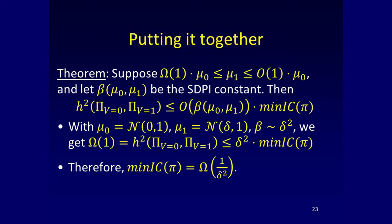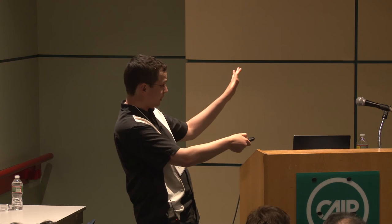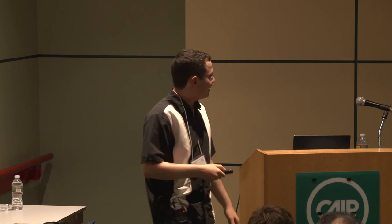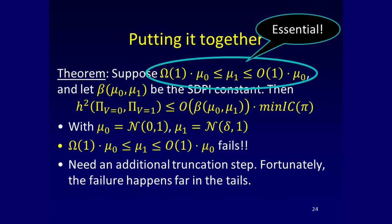The problem with the condition is that if mu_zero and mu_one are two shifted normal distributions, you need those two distributions to be within a multiplicative constant of each other — and it's actually necessary, otherwise the theorem fails. For two normals this is always false: if you go far enough into the tail, even a small difference of delta will amplify into any multiplicative difference. But luckily, you can truncate mu_zero and mu_one, and this doesn't happen until far enough out that it doesn't matter.